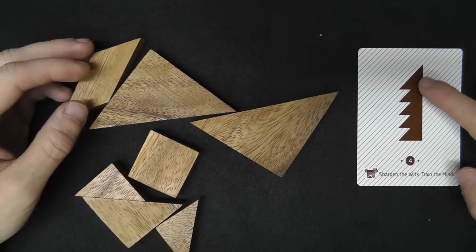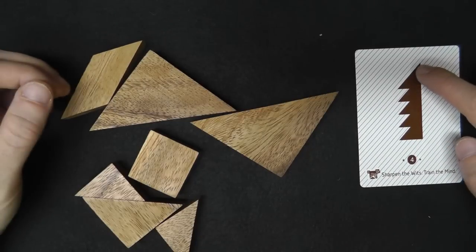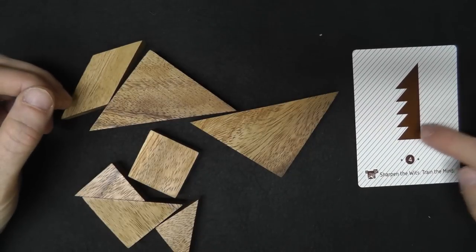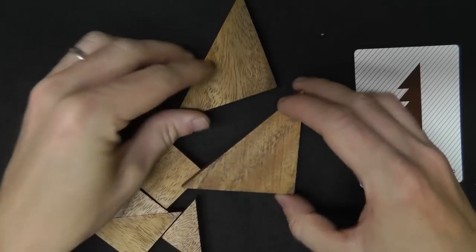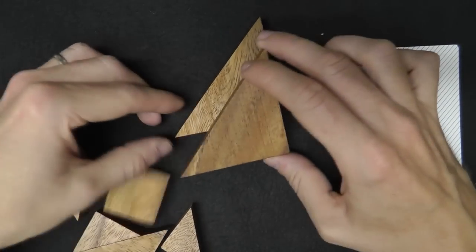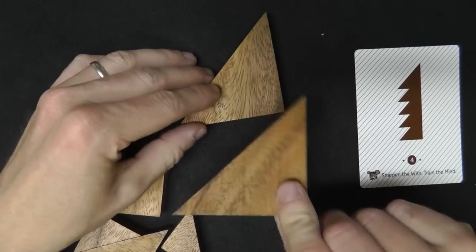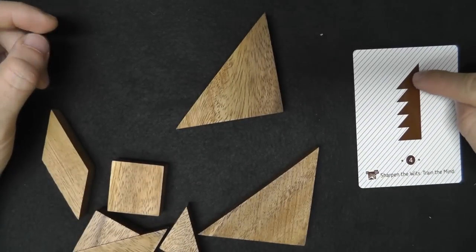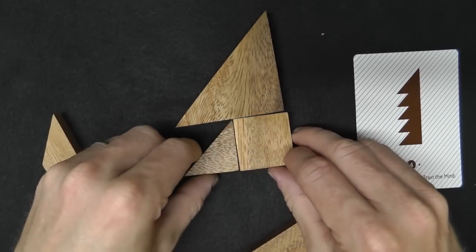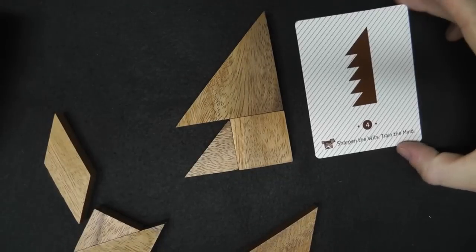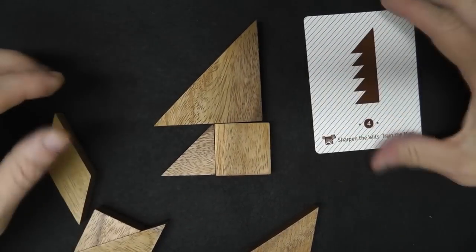Okay, so we have our card and we have to make this shape. So it looks easy enough: one triangle, two, three, four, five large triangles. But you don't have five large triangles and you don't go like this. You have to actually figure out how to make these shapes, like for instance, like this.